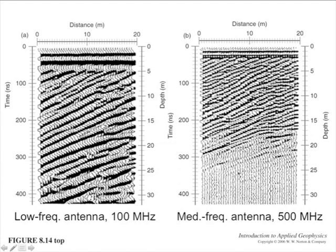So switching to a medium frequency antenna, maybe a 500 megahertz antenna, the frequency goes up, the period goes down, decreases. The waves are tighter. We're seeing the stratigraphy that's coming up toward the surface here is eroded at the surface. We're seeing that in greater detail.